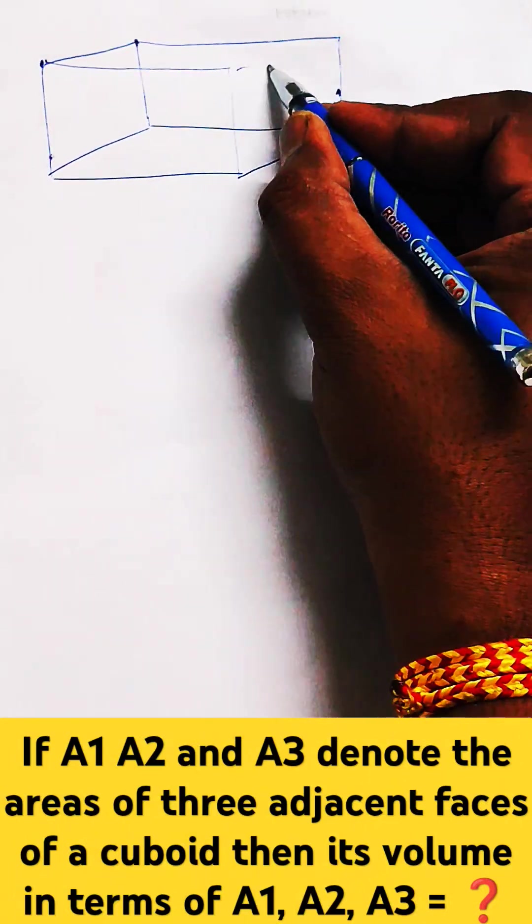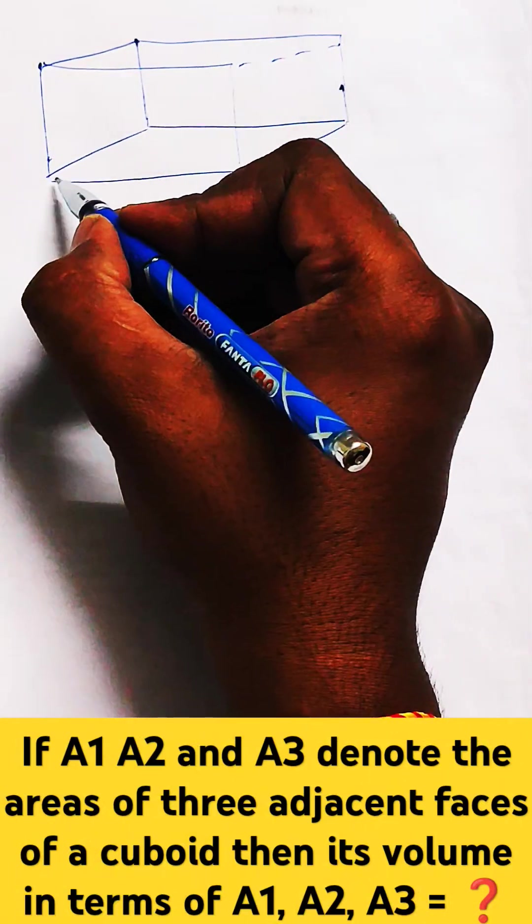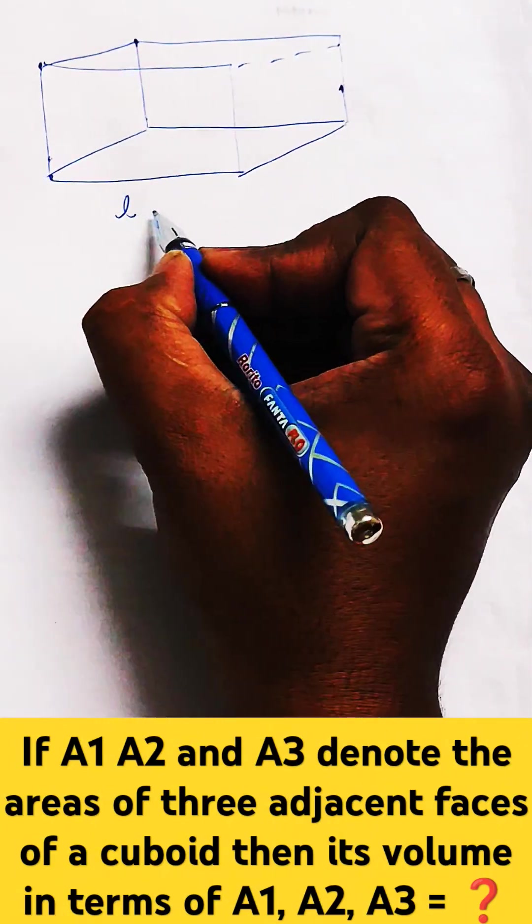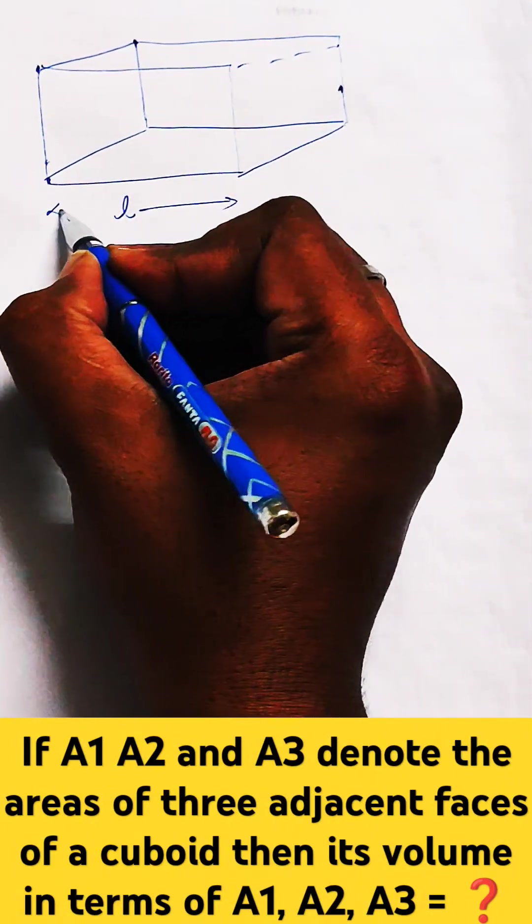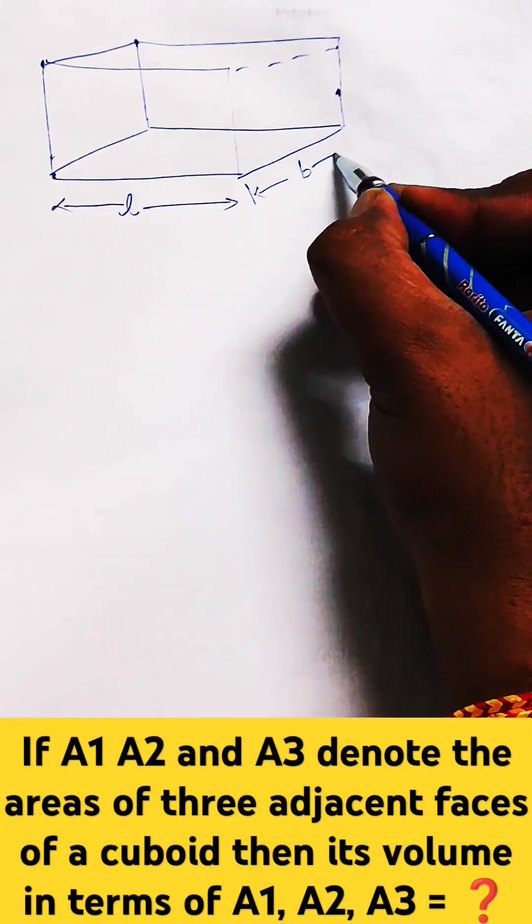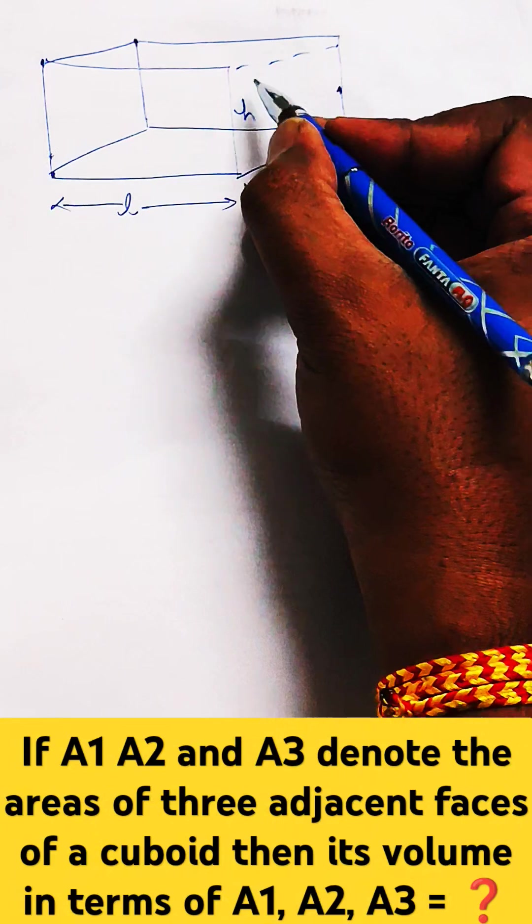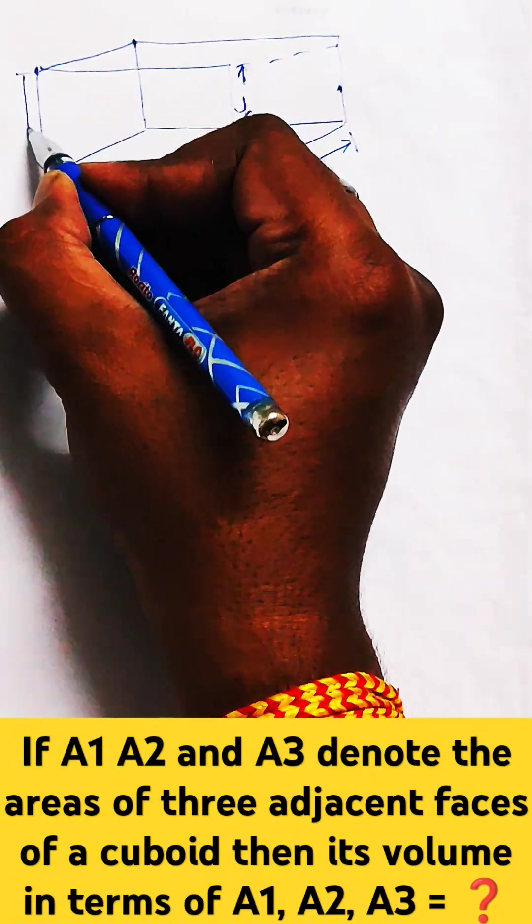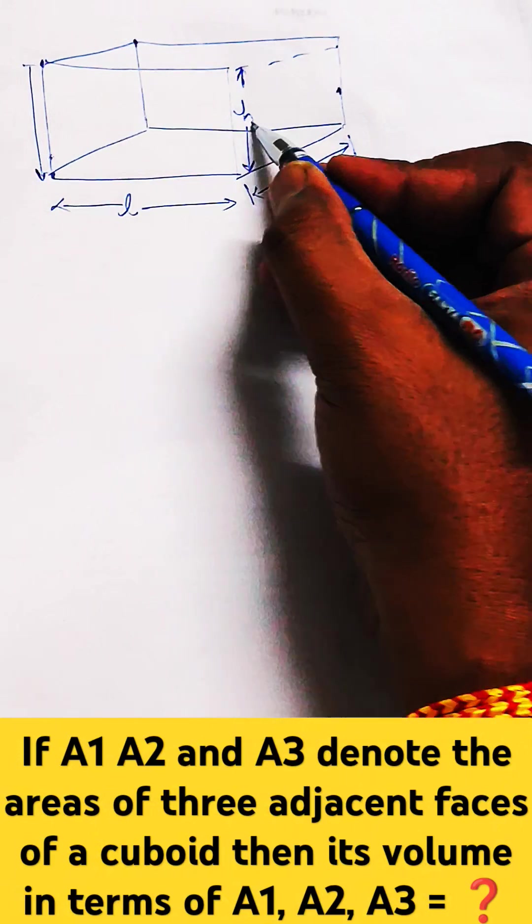First of all, we need to understand what are the three faces. So, let's say if this is L, this is B, breadth, length and breadth and this is height, edge, as shown over here.